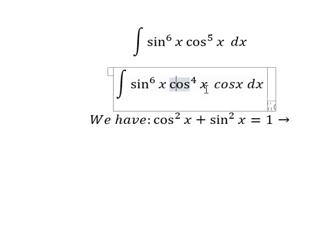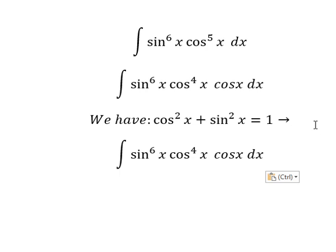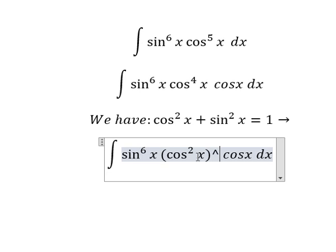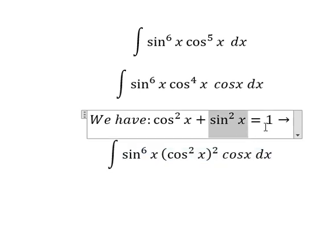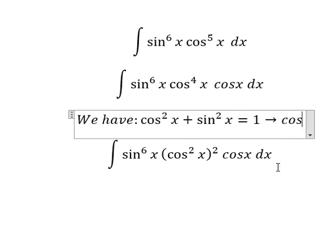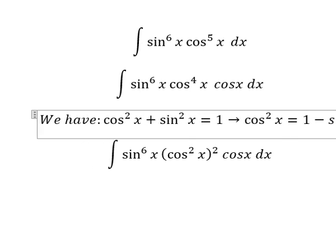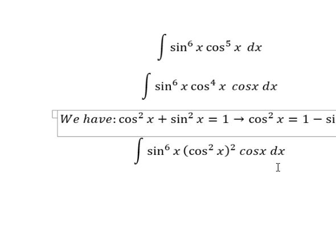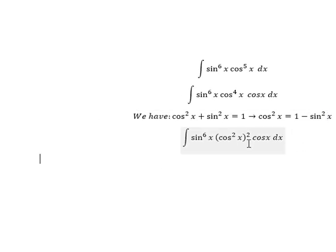So we can see that cos^4 x, that is cos^2 x to the power of 2, everything to the power of 2. So we put sin^2 x on the right side. So I will change cos^2 x into 1 - sin^2 x.